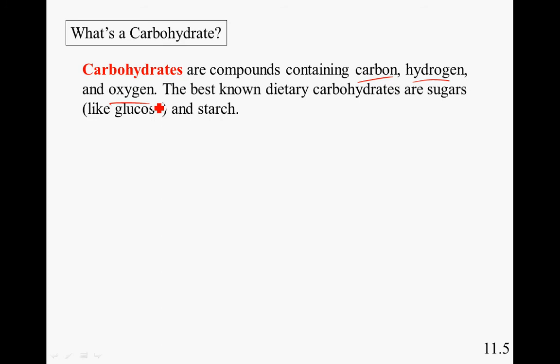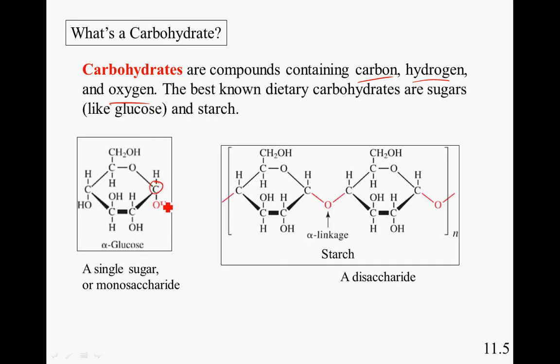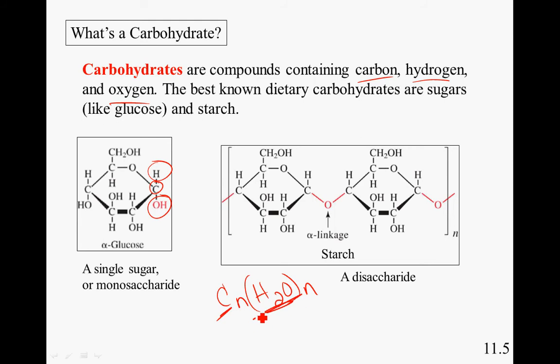The best known dietary carbohydrates are sugars like glucose and starch. If you look at the structure of the carbons, hydrogen, and oxygens, you will find that for every one carbon, there are one oxygen and two hydrogens. They are called carbohydrates because the basic compounds of carbon and water are combined. The basic structure is CnH2On — carbon hydrate.